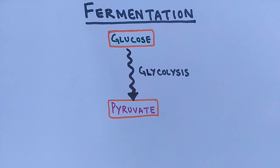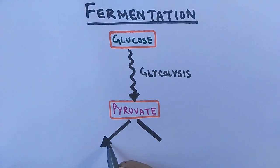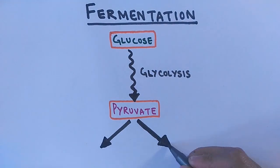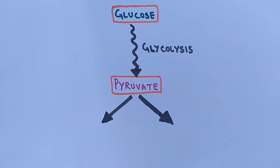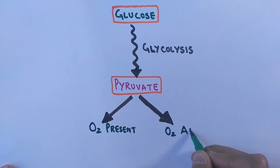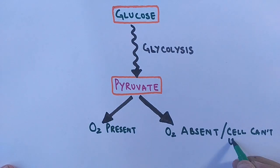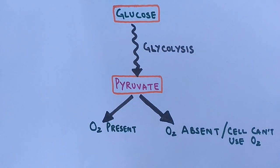Now, pyruvate or pyruvic acid has two fates, which depend on the cell and organism in which the molecule is present. It's the presence or absence of oxygen that determines the fate of pyruvic acid.